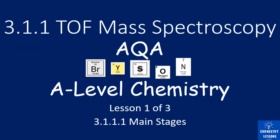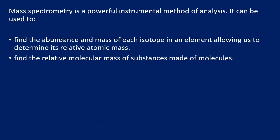This video is a Time of Flight Mass Spectrometry video and it's the first in a series of three. This video will focus on the main stages of the mass spectrometer, and after that we'll look at calculations which students tend to find fairly difficult. Mass spectrometry is an analytical technique with two main uses, both based around finding mass: identifying the relative atomic mass based on isotope abundance for elements, or determining the molecular mass of a larger molecule.